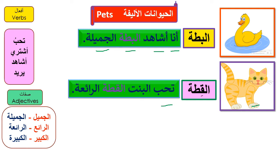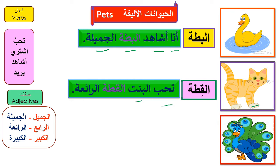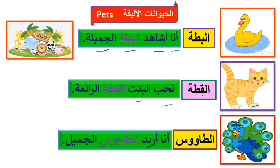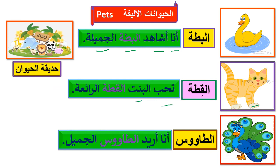Here's الطاوس. نعم، أحسنت! أنا أريد الطاوس الجميل — I want the beautiful peacock. جميل means beautiful. الطاوس في حديقة الحيوان — the peacock is at the zoo. You will learn the English meaning of the word طاوس as well.